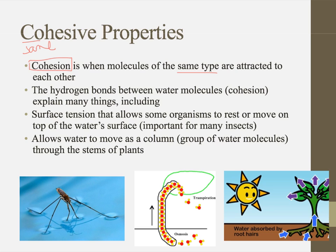You may notice a bug sitting on top of the water. These water molecules are so highly attracted to each other — so cohesive — that the surface of the water can bend without the bug breaking through. That's called surface tension, and it's all due to cohesion.